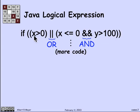Let's read the test. If x is greater than 0 or if x is less than or equal to 0 and y is greater than 100, go ahead and do the code that's in there indicated by the vertical dots. We're going to assume here that x and y are variables that are declared to be of type floating point or real number or integers for that matter.